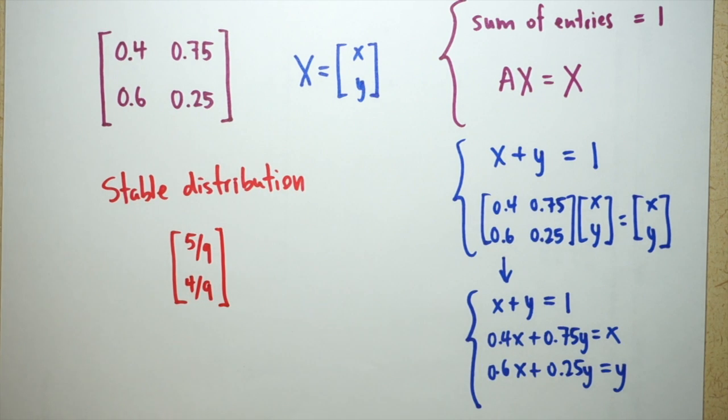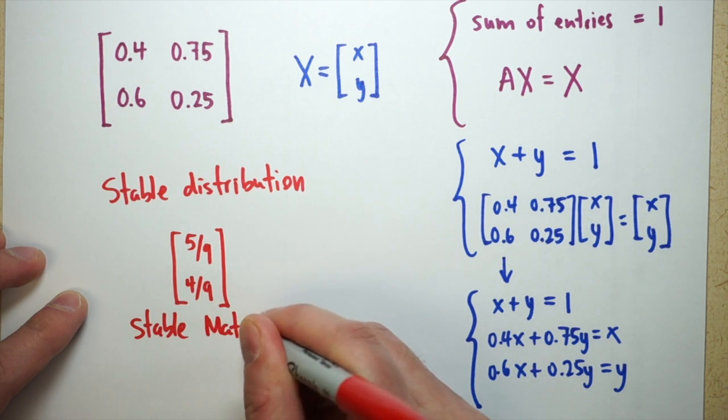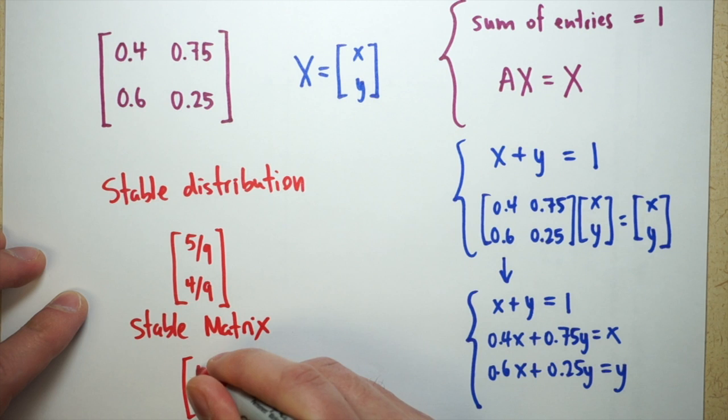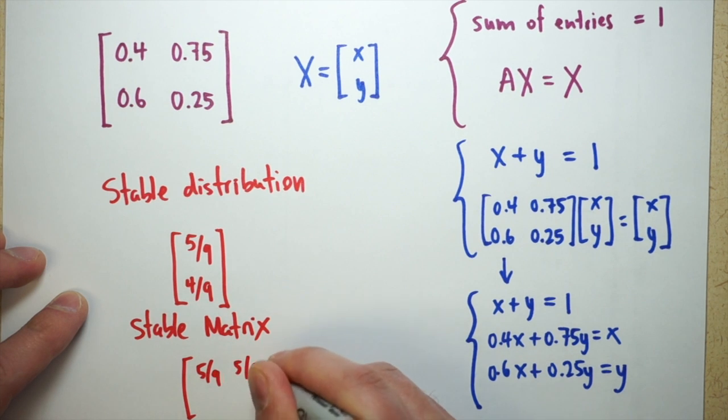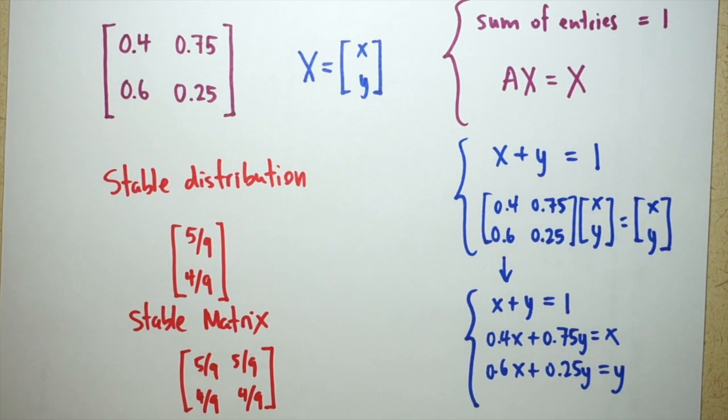The stable matrix is just going to be a couple of copies of the stable distribution. In this case, it's a 2 by 2 matrix, and so we're looking for two copies of my distribution: 5 ninths, 5 ninths, 4 ninths, 4 ninths. And that'll be my stable matrix. If I took the original matrix to a high power, this is what I'd find.